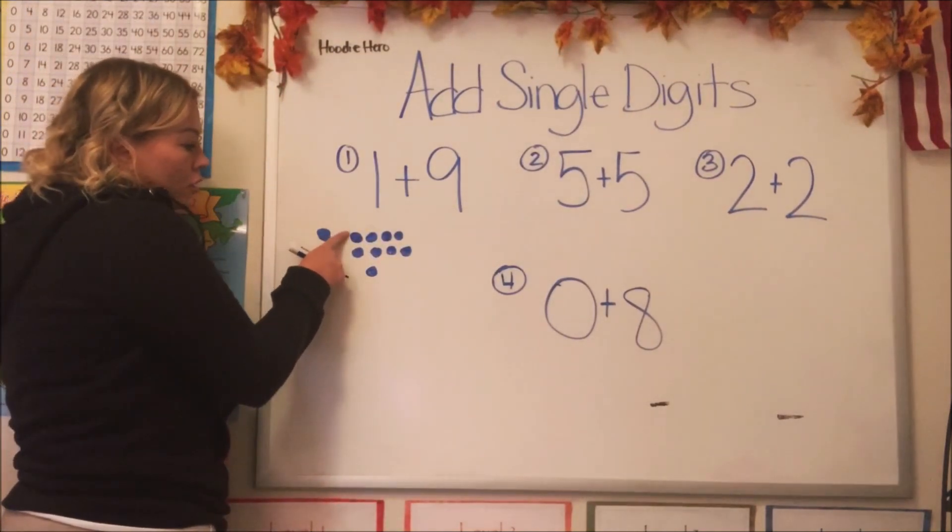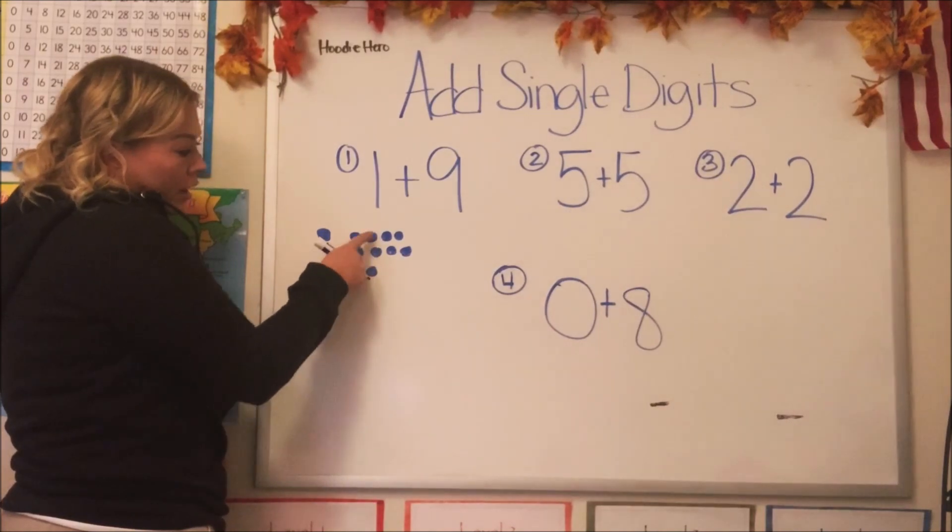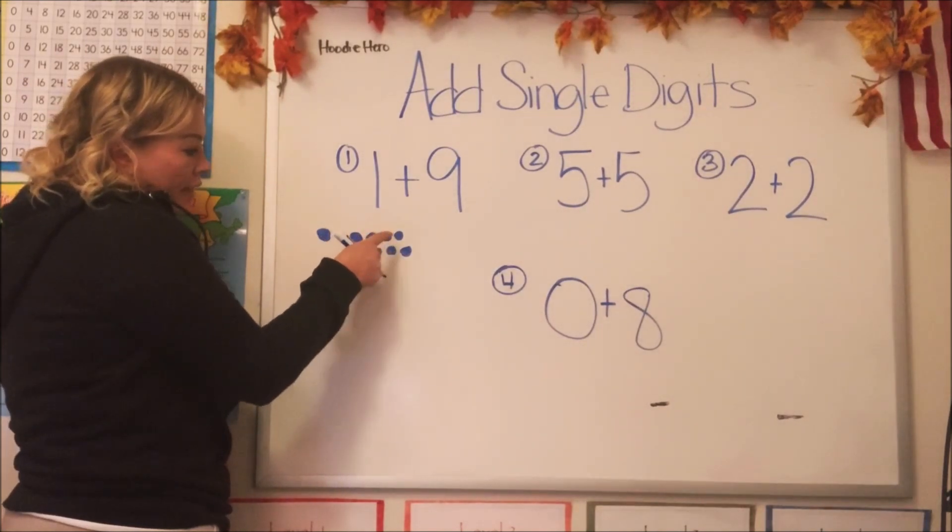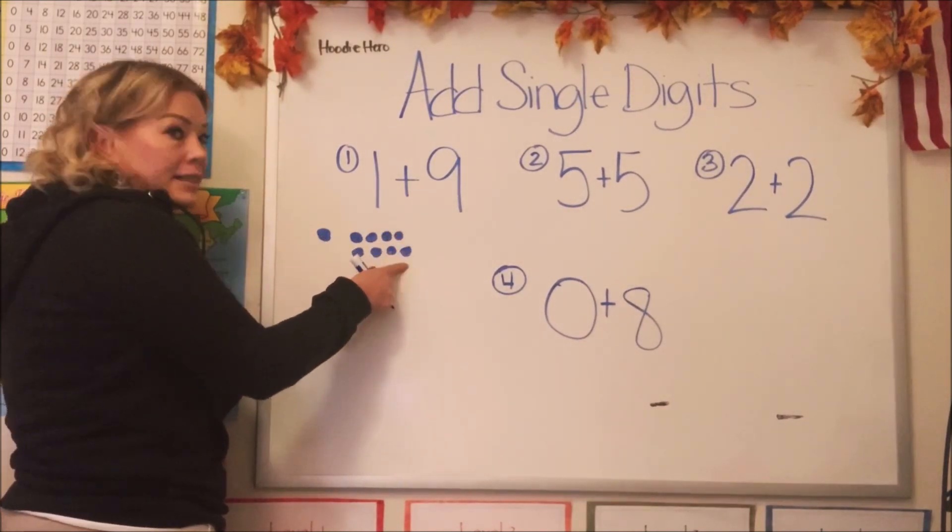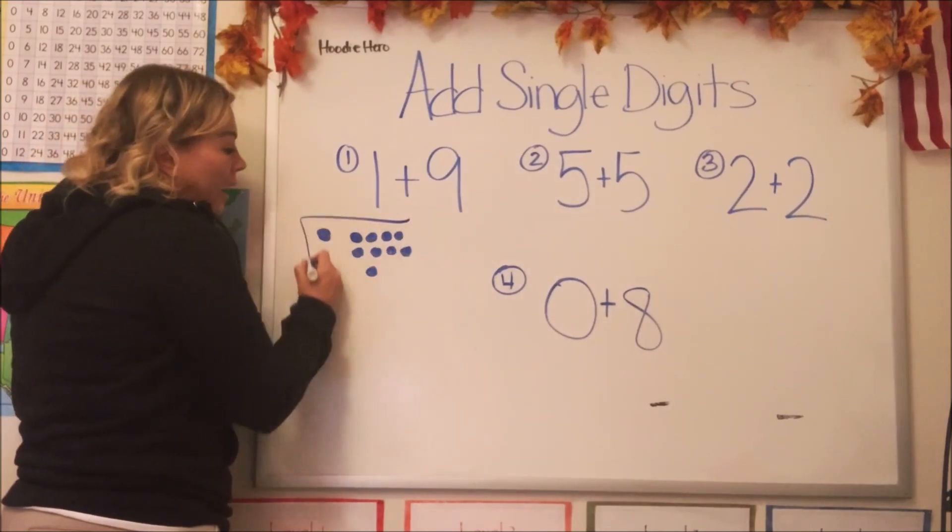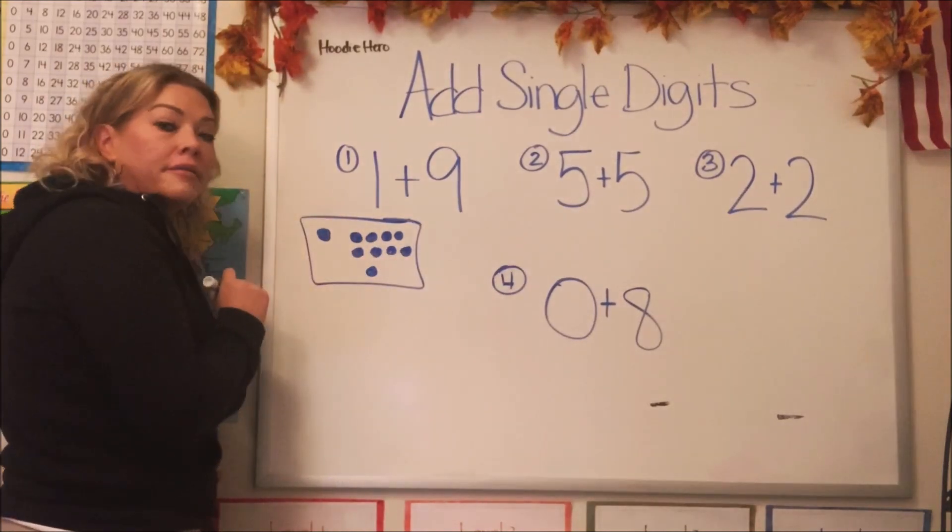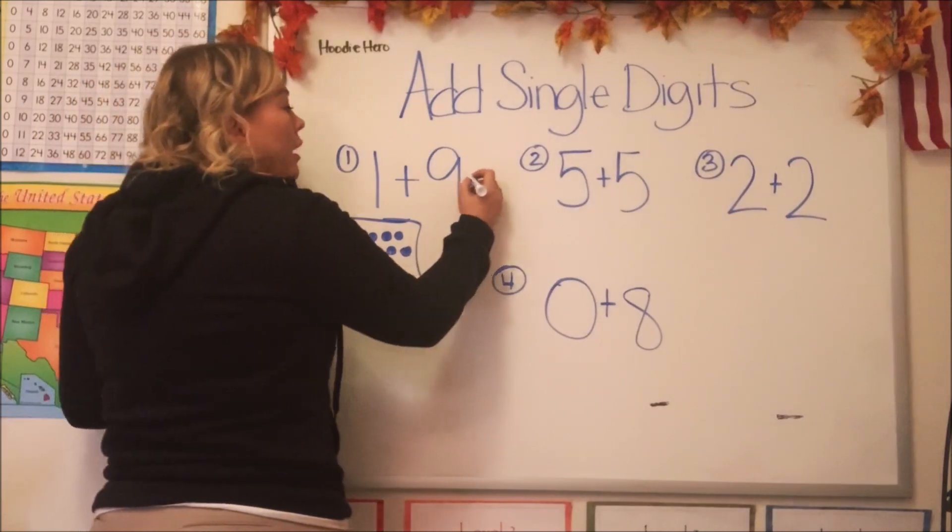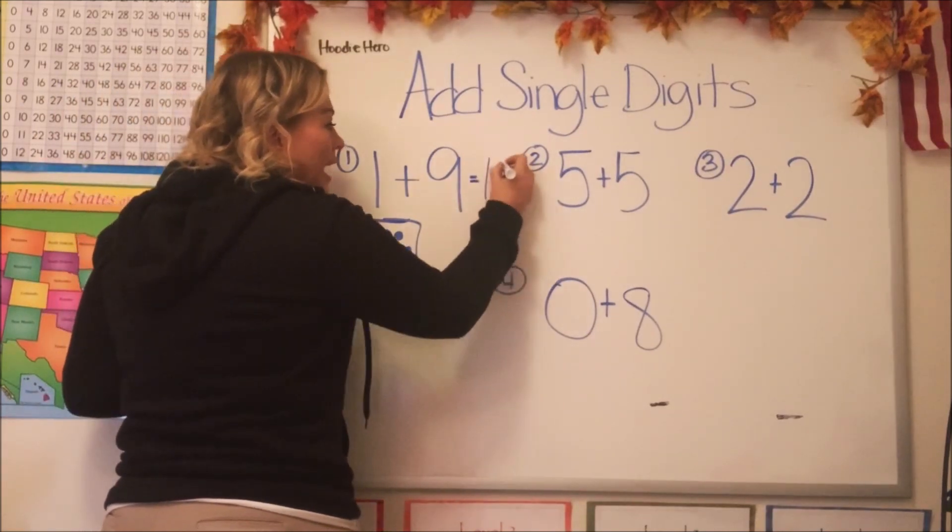Ready? One, two, three, four, five, six, seven, eight, nine, ten. When we count all of them, we have ten. So one plus nine is ten.